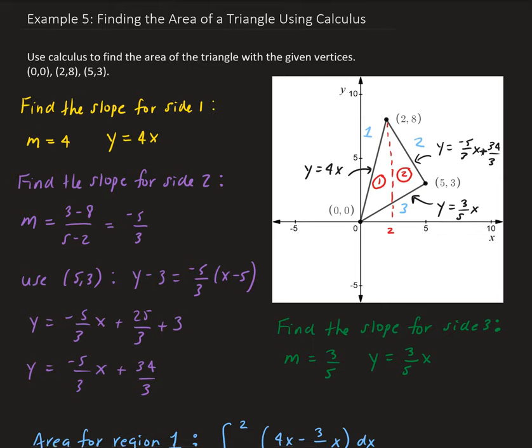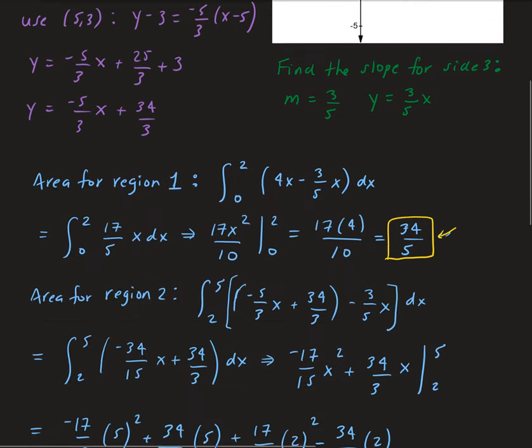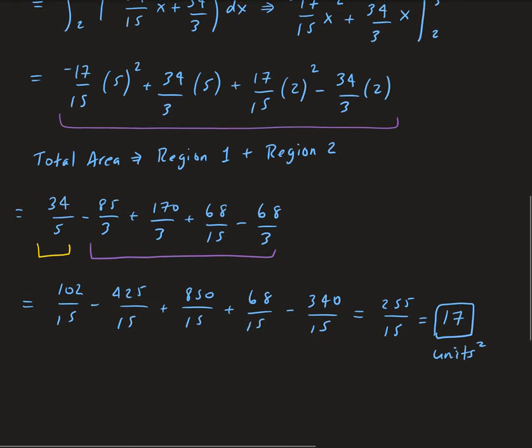To summarize: we found the equation for each line segment by finding its slope, then found the area of the first region by integrating 4x minus 3 fifths x from 0 to 2, and the second region by integrating negative 5 thirds x plus 34 thirds minus 3 fifths x from 2 to 5. Adding those together gives a total area of 17 units squared.